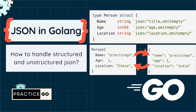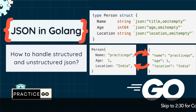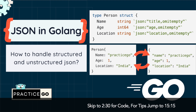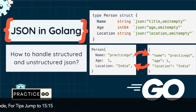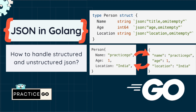Welcome back to the channel. In this video we are going to learn about JSON in Golang. Suppose we have two services, service A and service B, and they both want to exchange data. Before exchanging the data they require a certain kind of schema which both services will understand. There can be multiple formats like XML, JSON, and CSV.